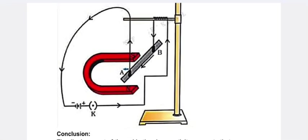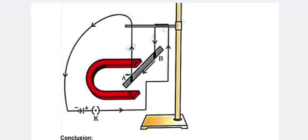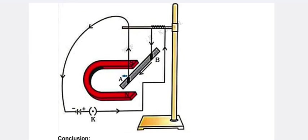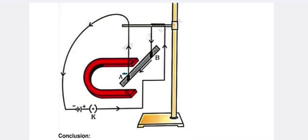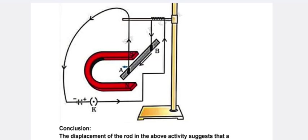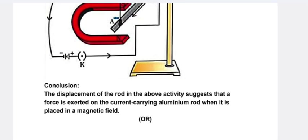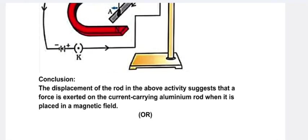This is the diagram: bar magnet, horseshoe magnet, all these are arranged with aluminum coil. Conclusion: the displacement of the rod in the above activity suggests that a force is exerted on the current carrying aluminum rod when it is placed in a magnetic field.